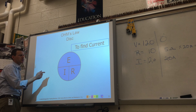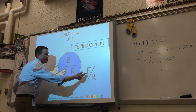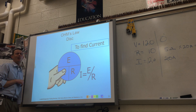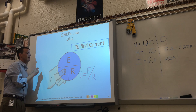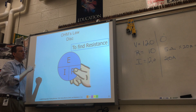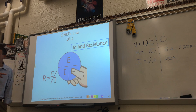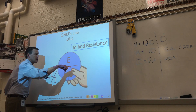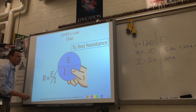To find current — which one's current? I. Cover up I, and that's going to be E divided by R, because it's over it. To find resistance, cover up R — that's going to be E divided by I. It's not that hard: just cover up whichever one you're looking for and that shows you what's left to figure out the problem. You don't need to remember all the math formulas if you can just draw the pie.